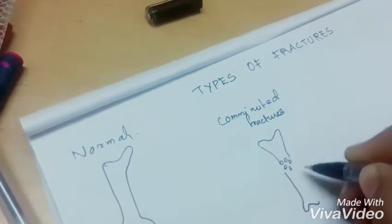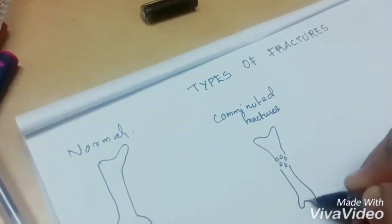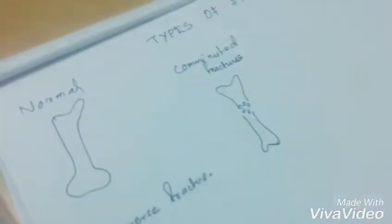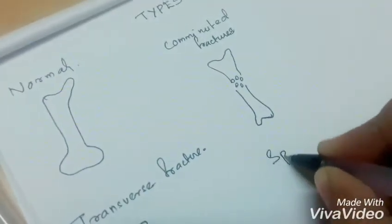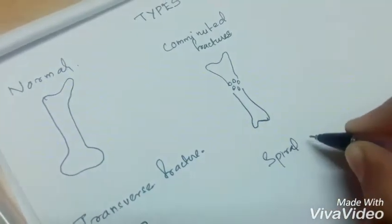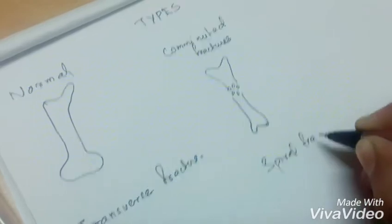This usually occurs in high impact trauma like vehicle accidents. Next one is spiral fracture, also called torsion fracture.